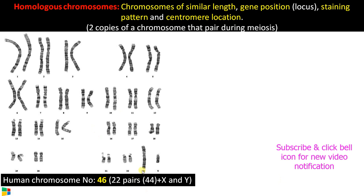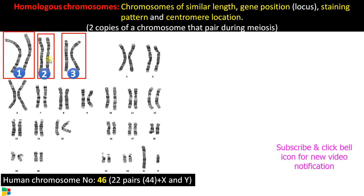This is a male human karyotype — as you can see, this is the X and Y chromosome. 22 pairs make 44 plus X and Y chromosomes. Each chromosome is represented twice. Chromosome number one makes a homologous pair, chromosome number two makes the second homologous pair, and so on. So we have 22 pairs of homologous chromosomes plus X and Y, making a total of 46 chromosomes.